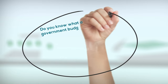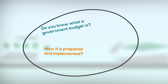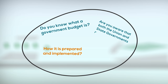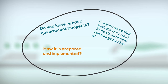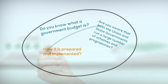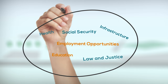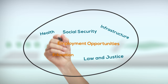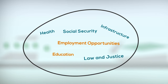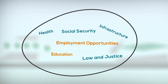Do you know what a government budget is? How it is prepared and implemented? Are you aware that both the union and state governments run a large number of schemes and programs with varied objectives like to improve health, education, to build infrastructure, to create employment opportunities, to ensure law and justice, and to provide social security, among others?